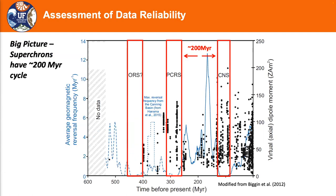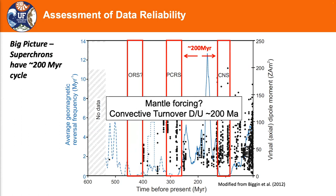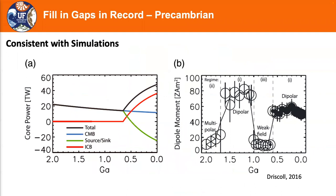People have looked at the occurrence of supercrons and noticed that the spacing of supercrons is somewhat similar to the time it takes for convective overturn of the mantle. From that, the hypothesis gained traction that mantle forcing is more important to the core than previously thought. This makes sense because the mantle is the controlling factor for how much heat gets transported out of the core, and this is important to the geodynamo as shown in several studies.